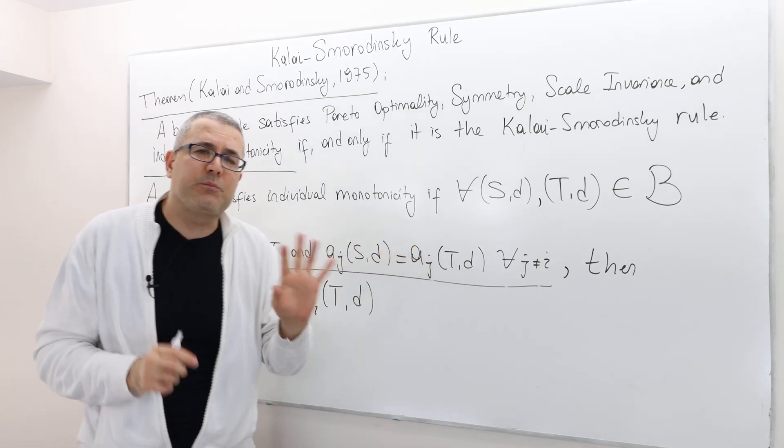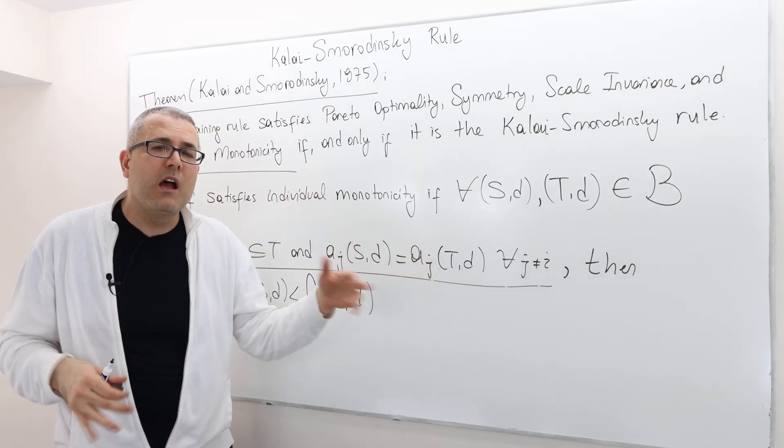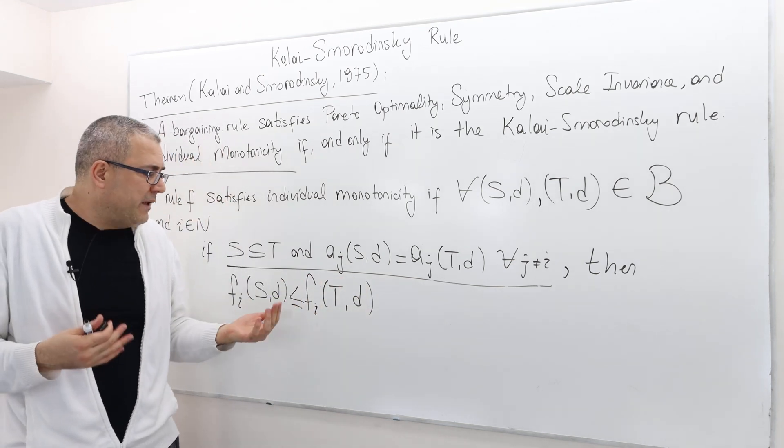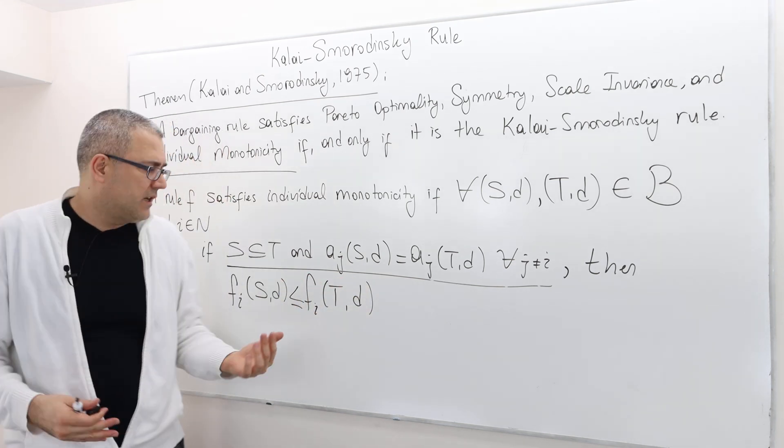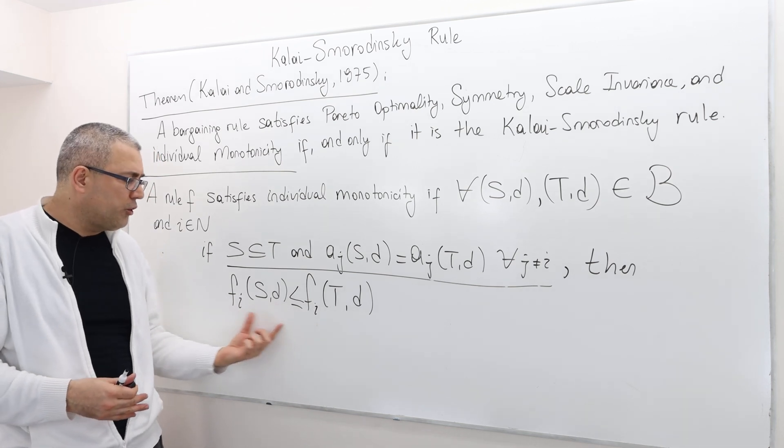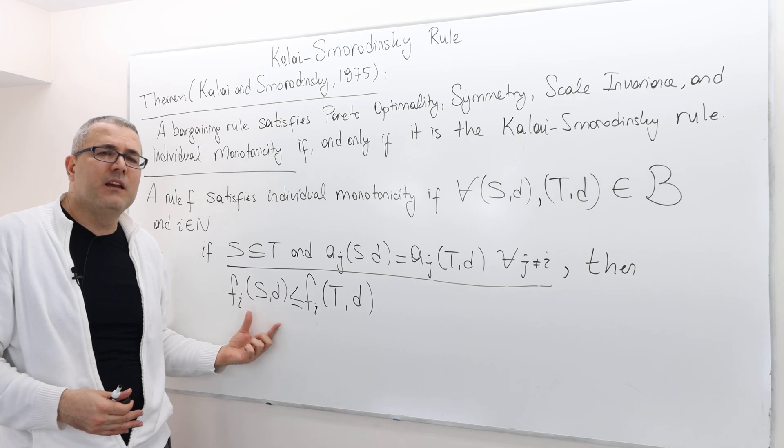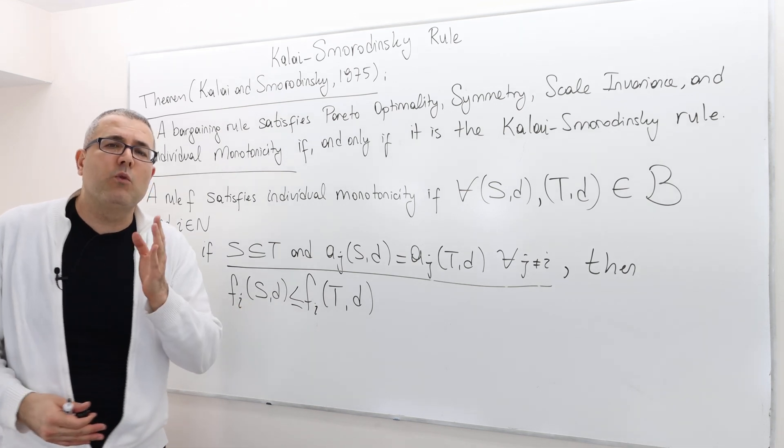If everybody's aspiration points are the same, well, then player I should be getting no less, I'm sorry, it's not equal. It should be getting in this new bargaining problem, no less payoff than the previous bargaining problem. Well, why so?